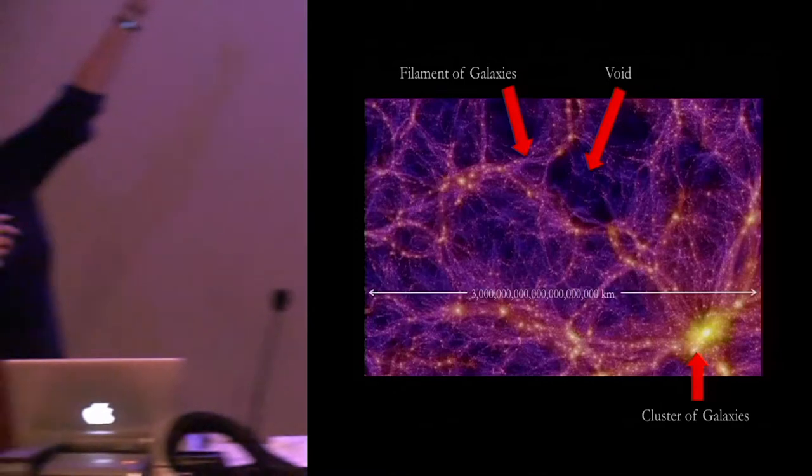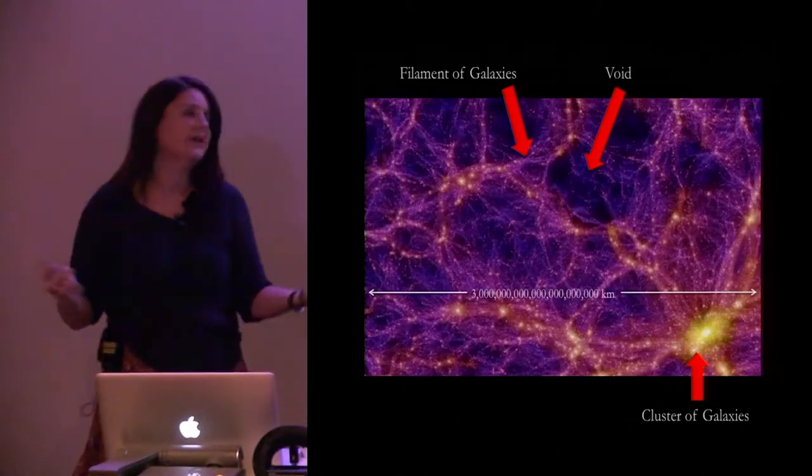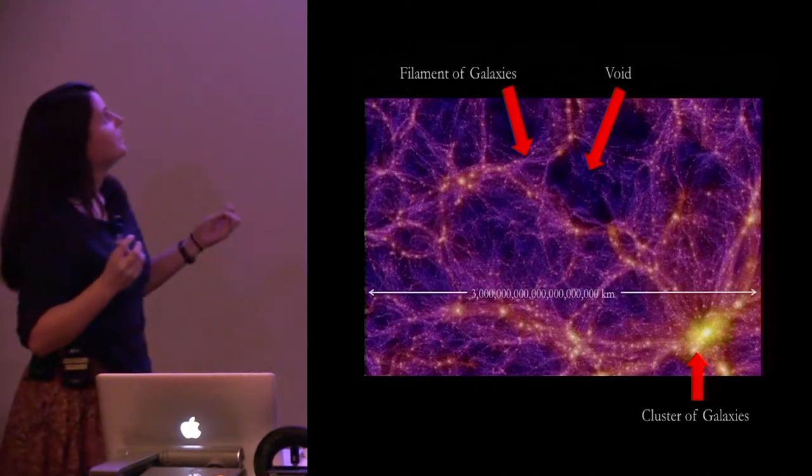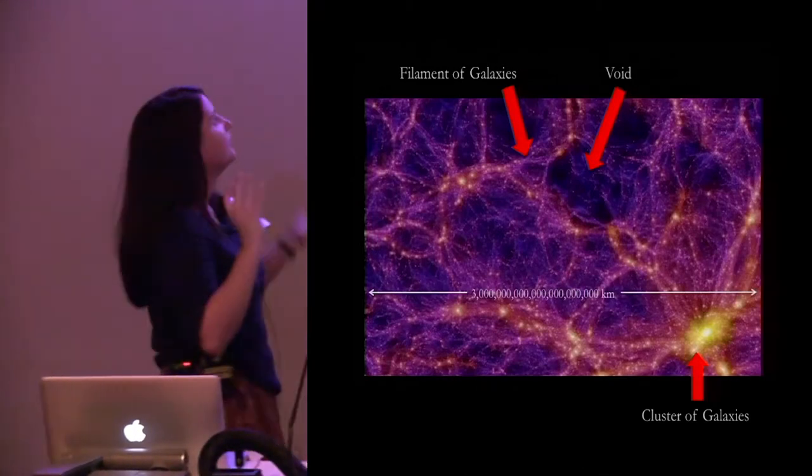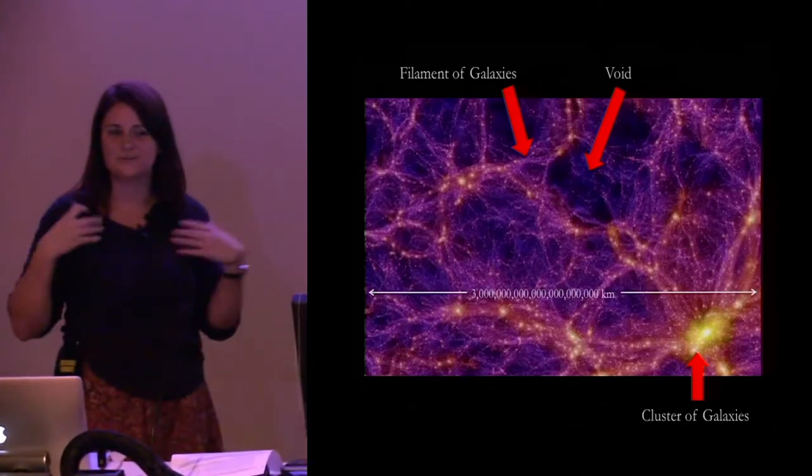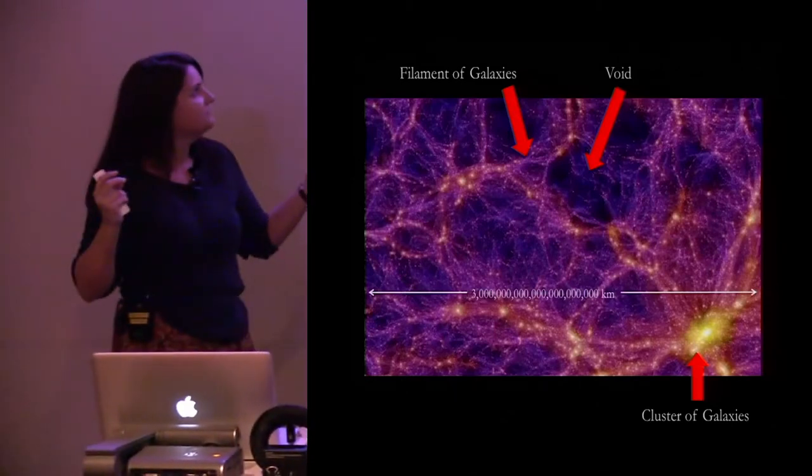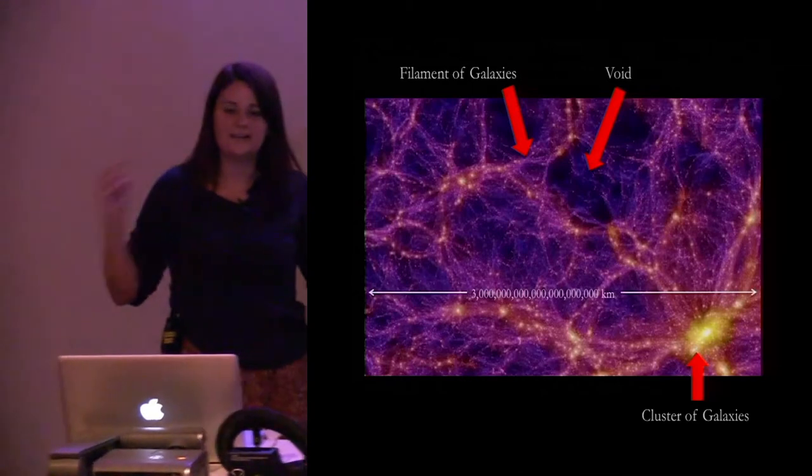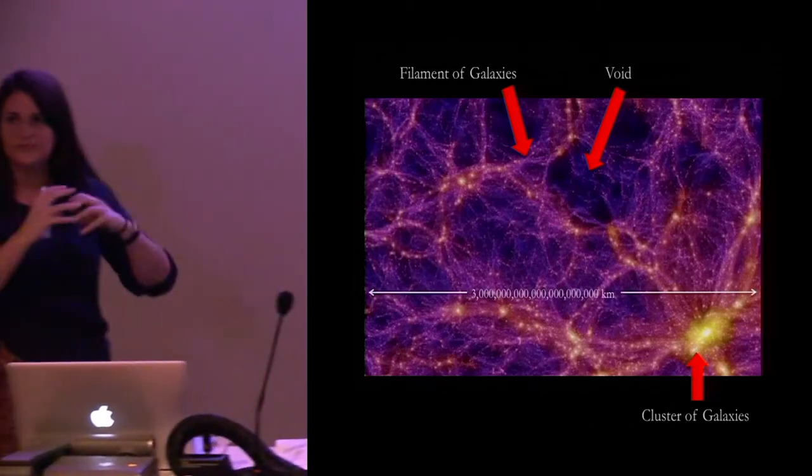In contrast, we have voids of galaxies which are sort of like the holes of the sponge of our cosmic web. There's very little, very little galaxies or anything in these voids. So linking clusters of galaxies to each other are filaments of galaxies which is what I've been studying. So filaments of galaxies are these long tenuous tendrils I guess you could say of galaxies, dust and gas and they link clusters of galaxies to each other.